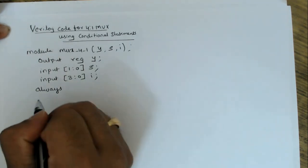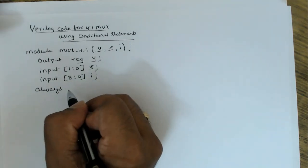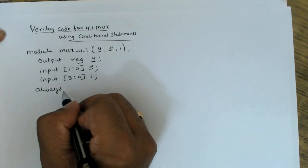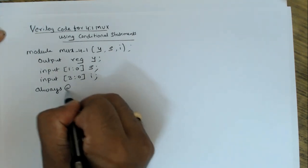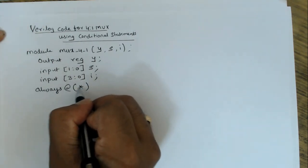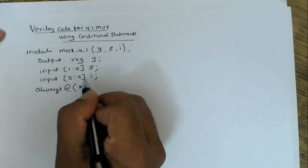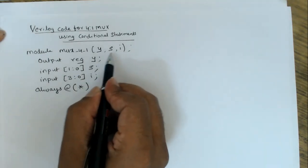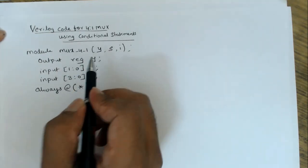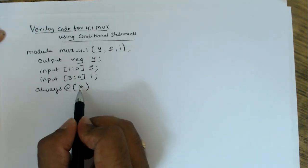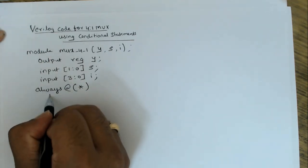Remember: you can use conditional statements — if-else — only inside a sequential block, especially the always block. always @(*) — whatever you write inside the bracket is called the sensitivity list. The star mark means any event occurring on the inputs. Whenever changes happen in s or i, this always block will execute.